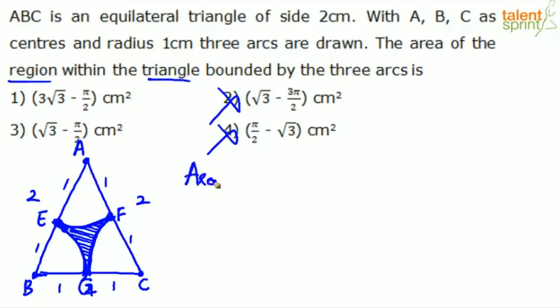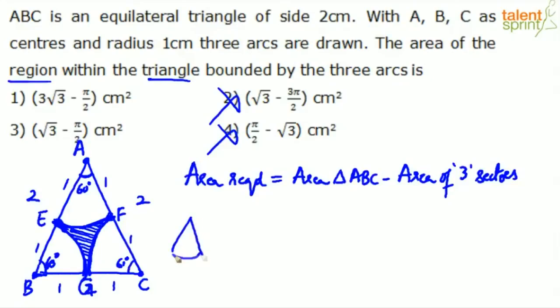So area required will be equal to area of triangle ABC minus area of three sectors. There are three sectors, area of each of the sectors. Now, important point here: each angle is 60 degrees. This is 60 degrees, this is 60 degrees, because it is an equilateral triangle. Each sector is of this shape, 60 degrees.